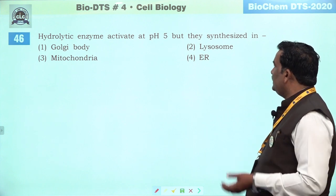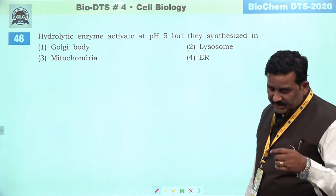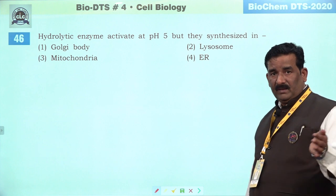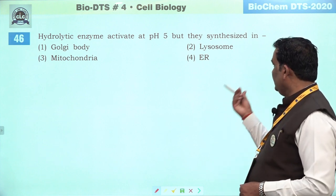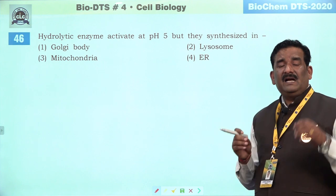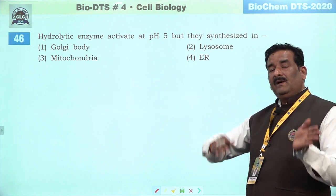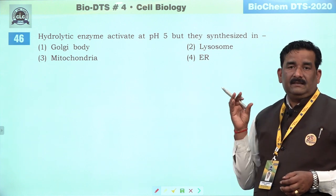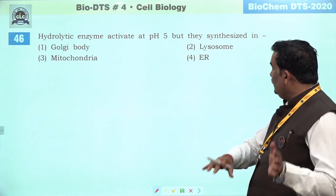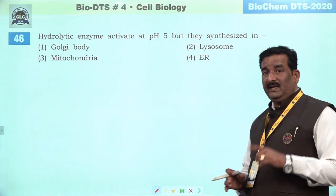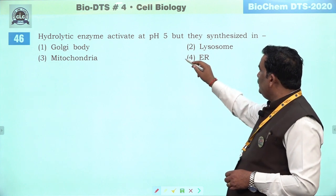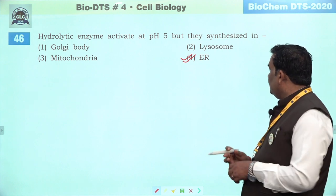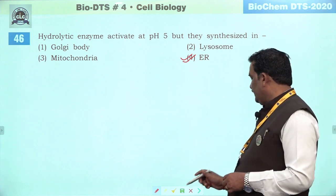Next question: hydrolytic enzyme activate at pH 5 — acidic nature mein yeh activate hote hain. Inका jo formation hai woh kahan hoga — endomembrane system ke zariye yeh bante hain. Inका seedha formation RER par milta hai — RER mein prepare hote hain. Golgi body mein modification hota hai, and finally they are packed inside the vesicle which also acts as lysosome. Formation RER mein hoga. Humare paas ER behtar answer hai.